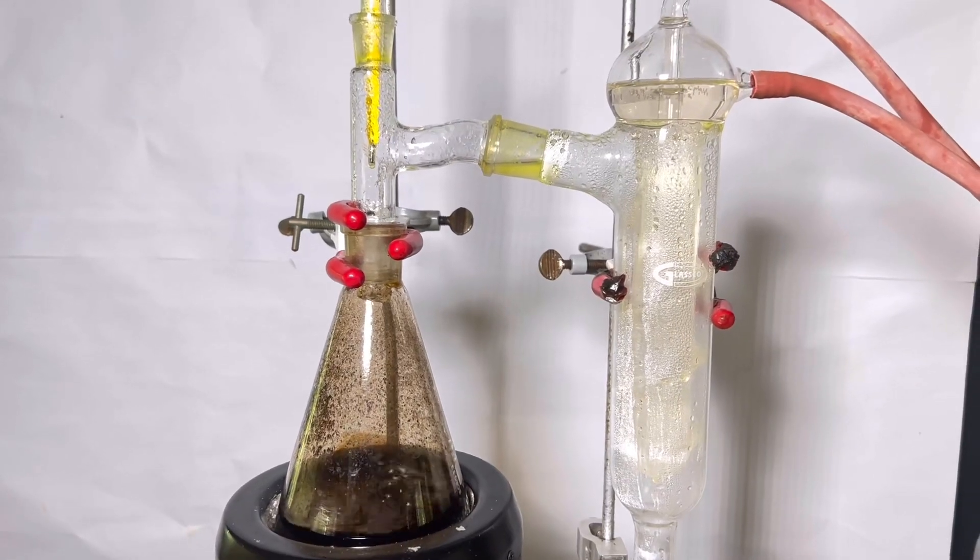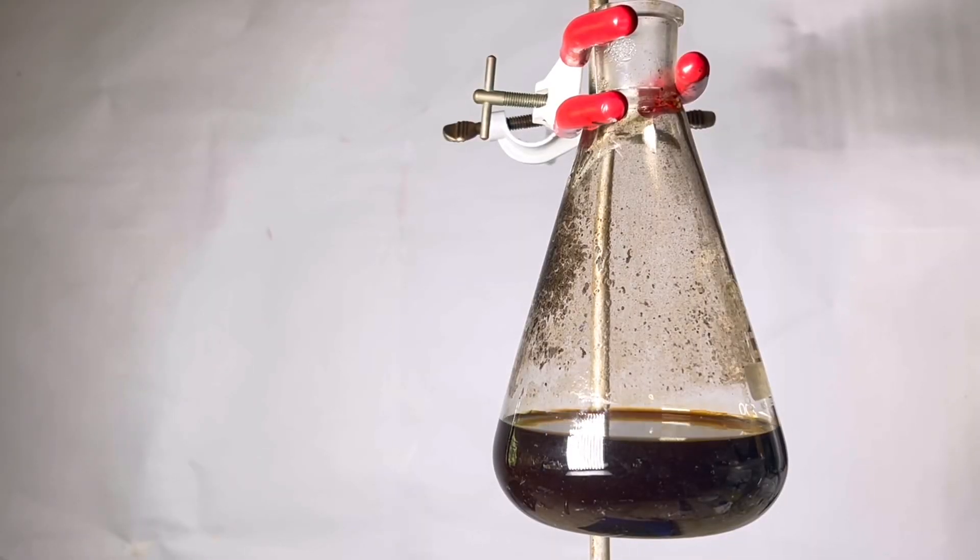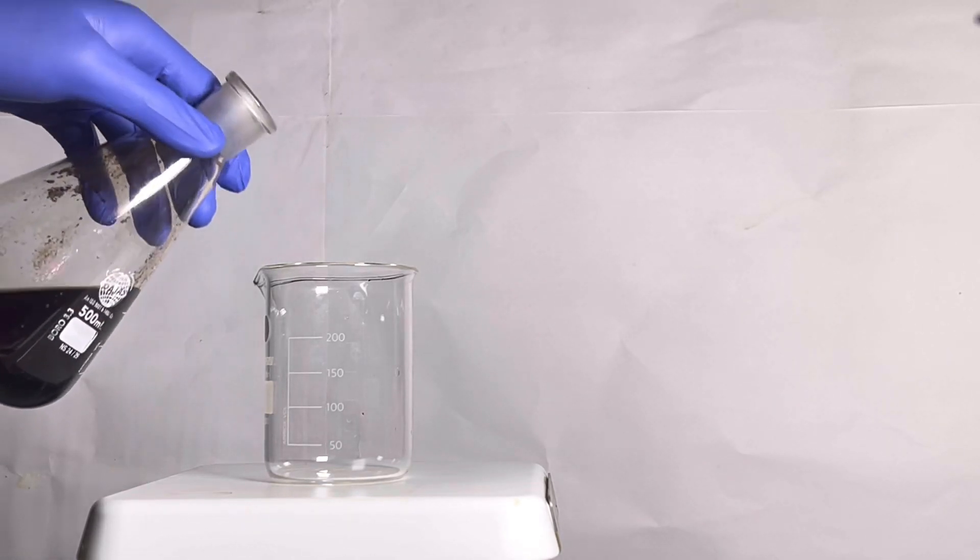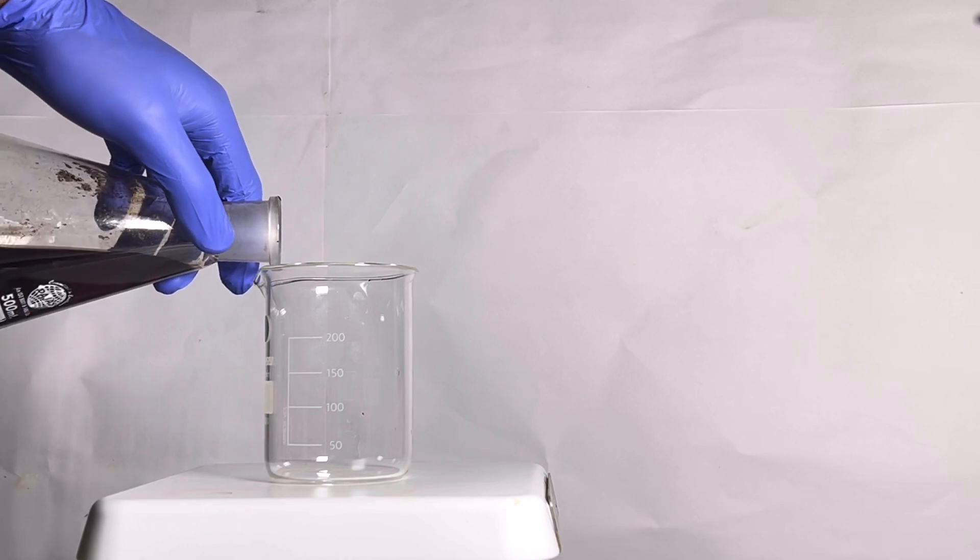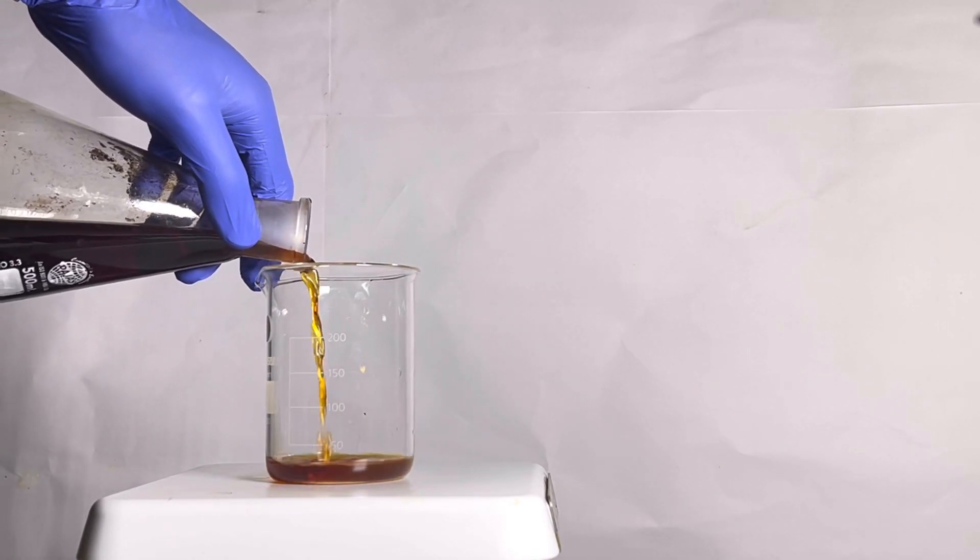The receiving flask containing ortho-nitrophenol is kept in the refrigerator overnight. The distilling flask was let to stand for few minutes. The maximum possible liquid from the top is decanted into a beaker. This contains para-nitrophenol. This beaker is also placed into the refrigerator.